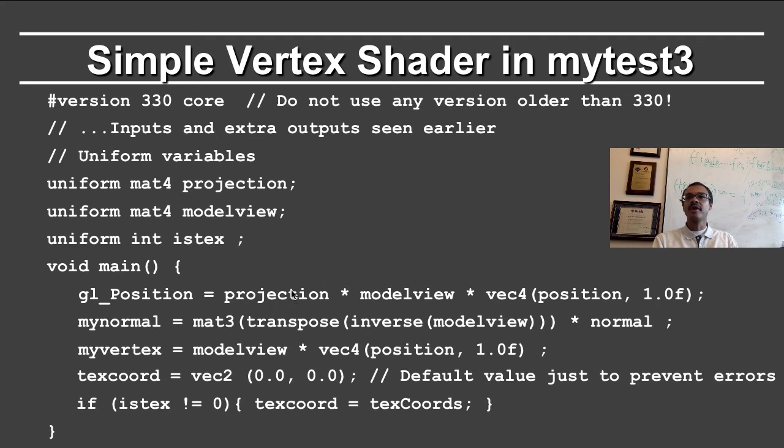In fact, by the product of the projection and model view matrices. Notice that we are now doing things in homogeneous coordinates and therefore we have to define a vec4 taking the x, y, z coordinates of the position and the w coordinate equal to 1.